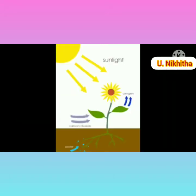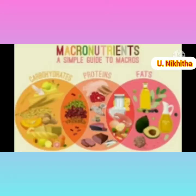Plant nutrients fall into three categories, all of which are based on the amount a plant needs, not the importance of the individual nutrient. Each plant nutrient performs a crucial role in plant growth and development. Macronutrients are the nutrients that plants require in larger quantities. For example, plants need nitrogen, phosphorus,